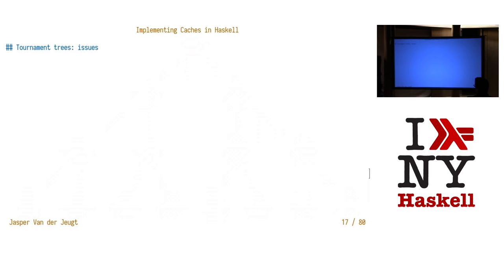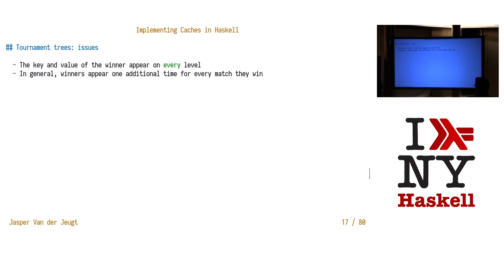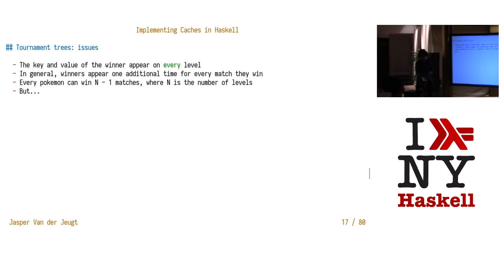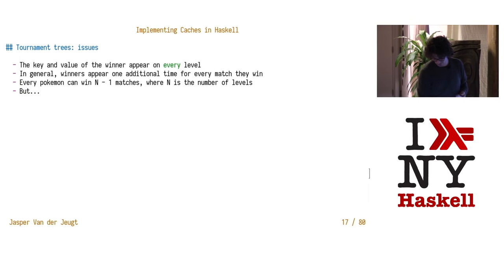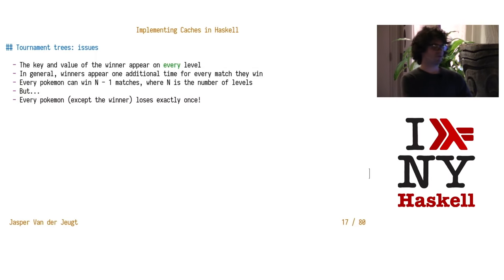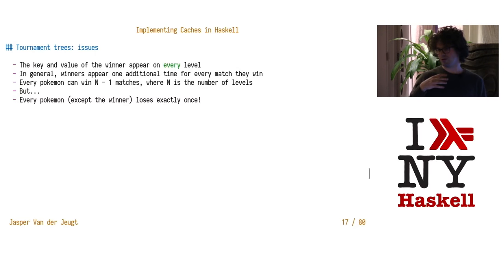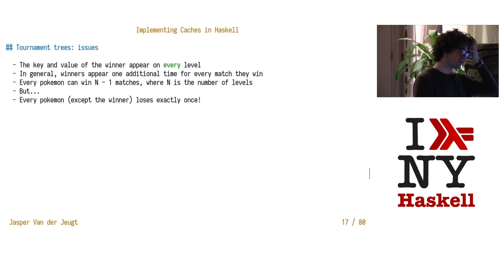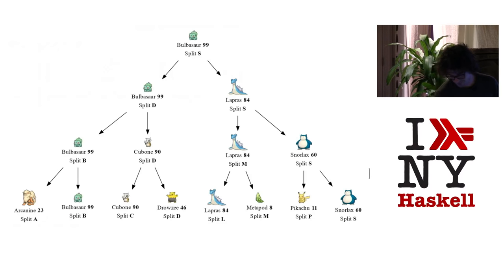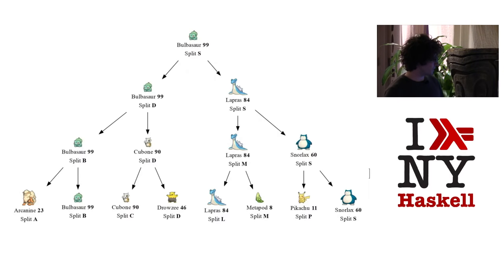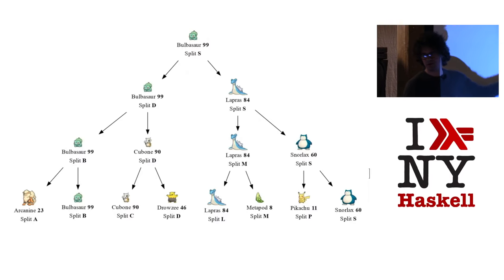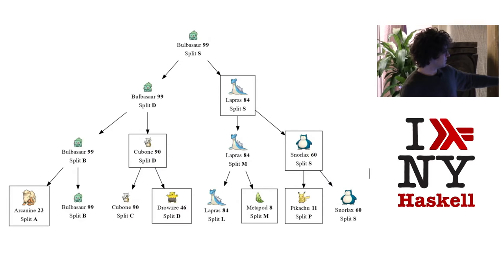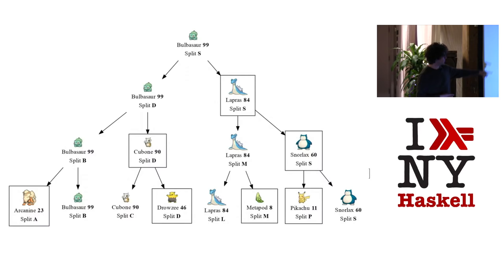It's a little bit more complicated than just taking the top and merging the other trees. There's a bunch of issues — the value of the winner appears on every level, you saw Bulbasaur on every level. In general, Pokémon can appear more than once — basically for every match you're in, you appear in the next match. So a Pokémon can appear end times. But the key insight is that every Pokémon who is not the winner just loses once — either to the winner or to someone else — and we can use that to build a much better tree.